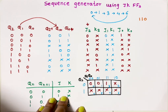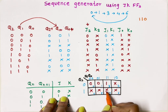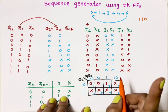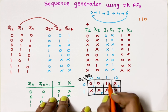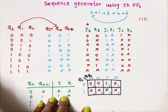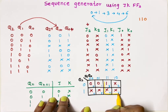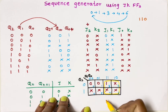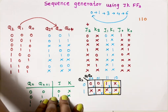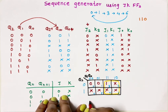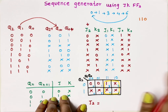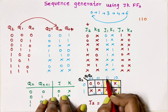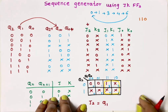After putting values, the next step is grouping of 1s. I have two 1s, but I can consider don't cares as 1 or 0. So I make a group of these 4 cells — three don't cares and the two 1s. The equation becomes J2 = Q1, because Q0 varies (0 and 1) so we can't take Q0, but Q1 is 1 in both rows, so J2 equals Q1.